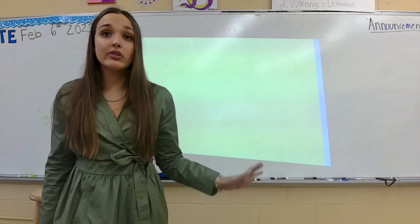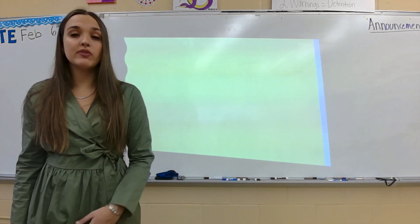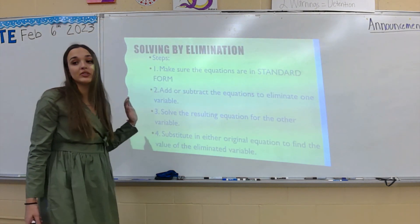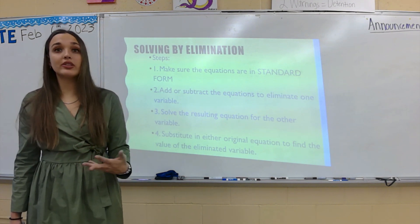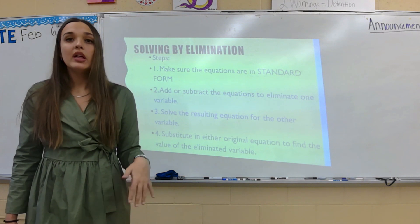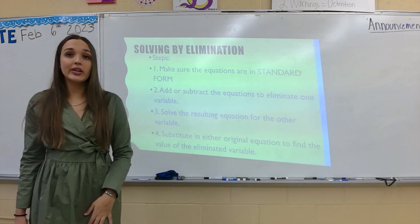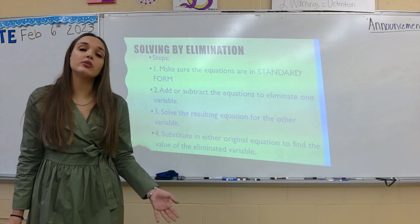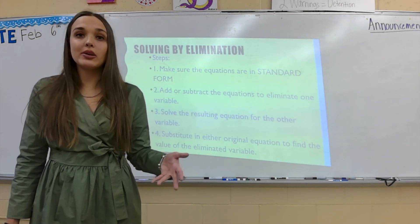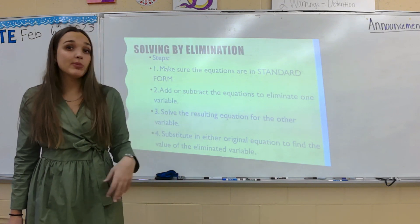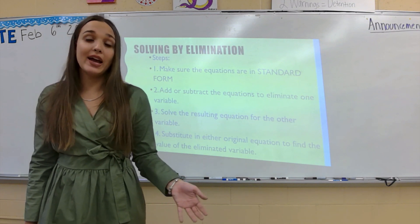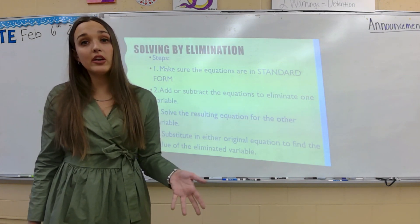So let's look over our steps to solve systems of equations by elimination. Our first step is to always make sure the equations are in standard form. Then we're going to add or subtract the equations to eliminate one of the variables. Before we even do that, we might have to multiply one or both equations to cancel out a variable — that would be the step-it-up type of problems. But for basic elimination problems, we might just be able to add or subtract to cancel out one of the variables.